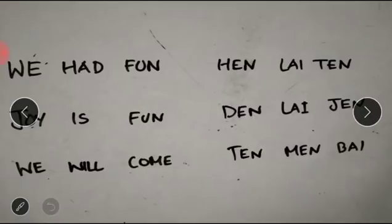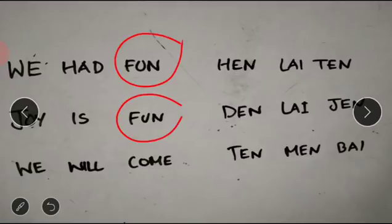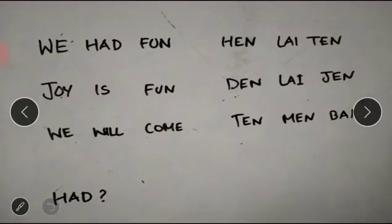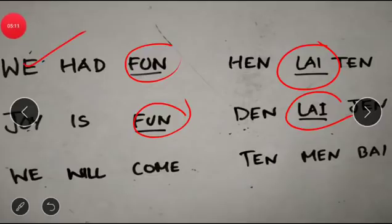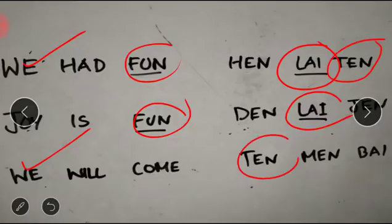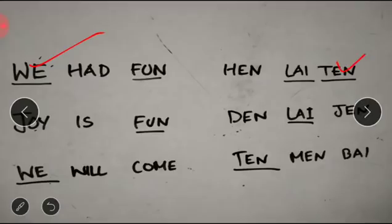We need to find the code for 'head'. We look at the word 'fun' — it appears in both the first and second sentences, and the common code word in both is 'lie', so 'fun' = 'lie'. The word 'we' appears in the first and third sentences, and the common code word is 'ten', so 'we' = 'ten'. That leaves 'head' mapped to 'hen'. So the answer is 'hen'.